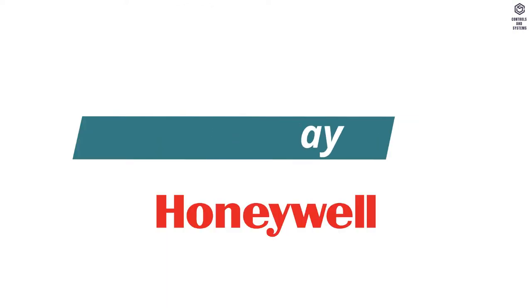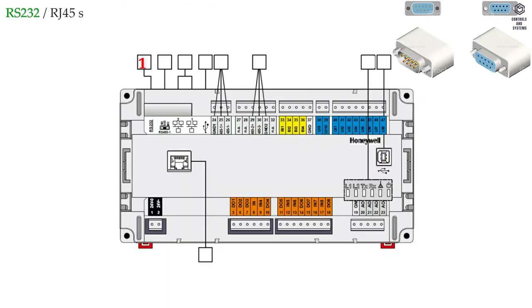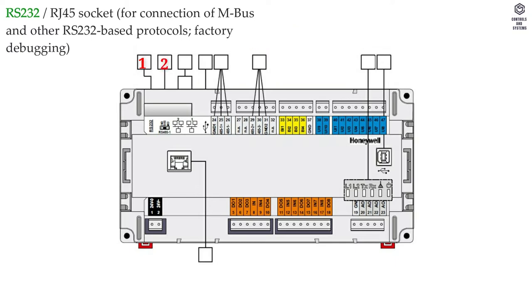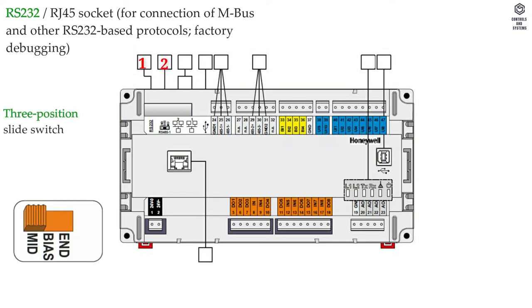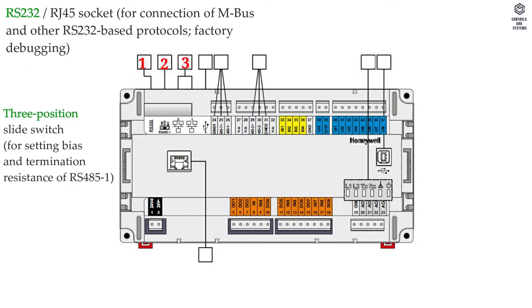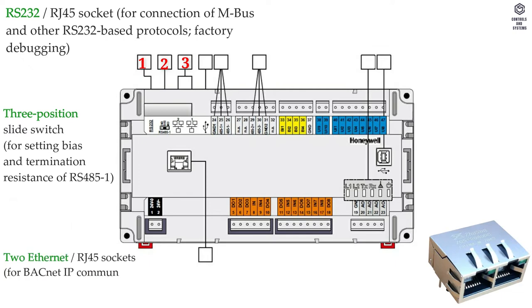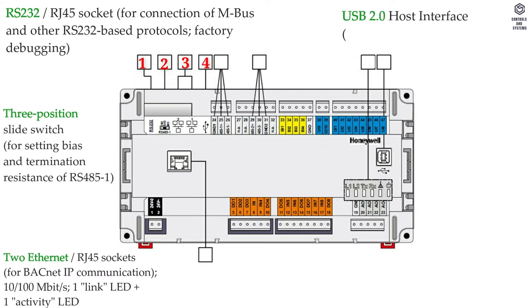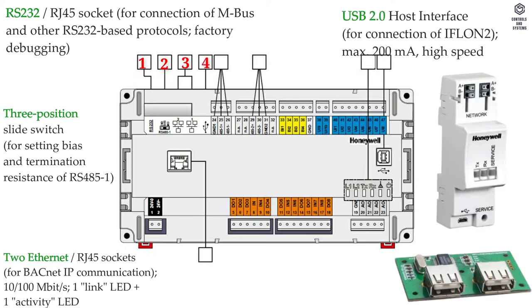Display: 1. RS-232 RJ-45 socket for connection of M-Bus and other RS-232-based protocols. 2. 3-position slide switch for setting bias and termination resistance of RS-485-1. 3. Two Ethernet RJ-45 sockets for BACnet IP communication. 4. USB 2.0 host interface.